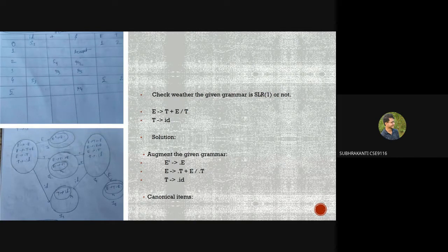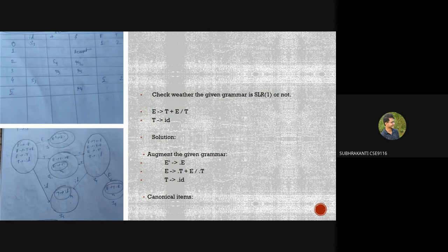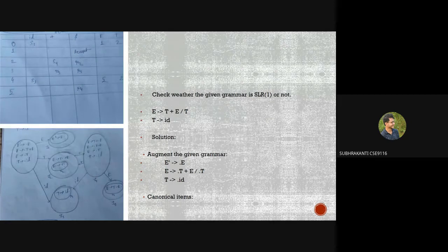For T, we get I2 containing E→T·+E and E→T·. The expression E→T· means the dot has reached the last position, so it is fully reduced — this is R2. For checking id from I0 we get I3: T→id·, fully reduced. In I2, checking plus (a terminal, no expansion) gives I4: E→T+·E, with expansions E→·T+E, E→·T, T→·id.